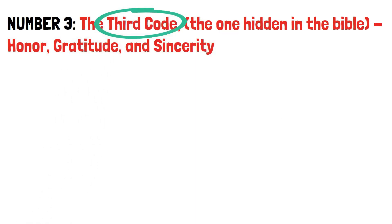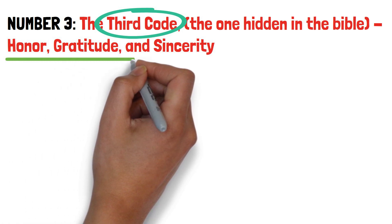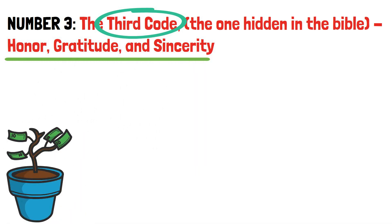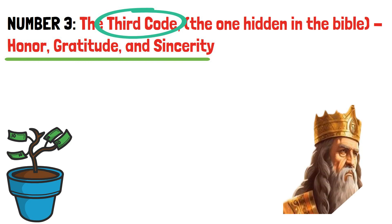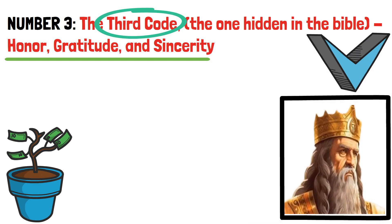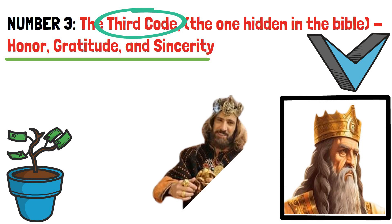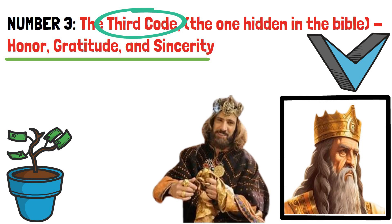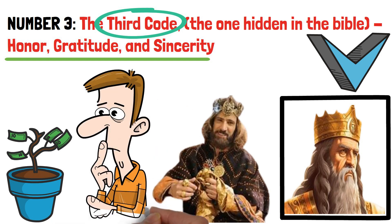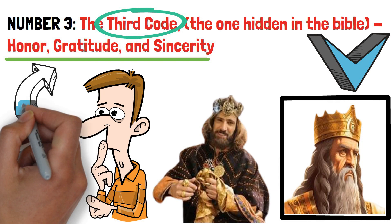Lastly, Solomon's third code was all about honor, gratitude, and sincerity. While material wealth is a significant aspect, Solomon's story teaches us that a genuine connection with the divine involves more than just accumulating riches. In the narrative, we find Solomon expressing his love for the Lord by adhering to the decrees of his father David and offering sacrifices and incense in sacred places. Here, the focus isn't solely on the physical acts of sacrifice, but on the underlying principles of honor and gratitude.